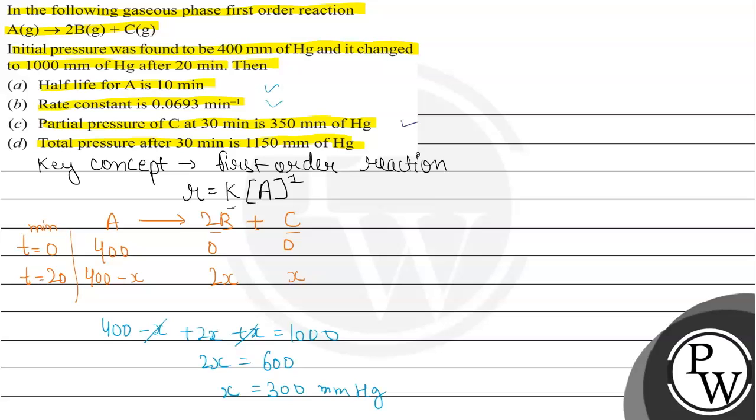And here we can also write the full thing: minus x plus 2x plus x, so this got cancelled. In this way, 400 plus 2x, and x value we have already found for 30 minutes is 350 mm Hg.